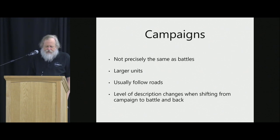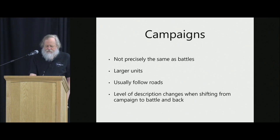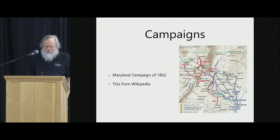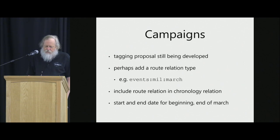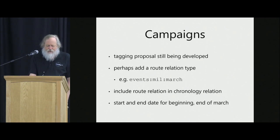Campaigns are a little different — not precisely the same. The units are larger and they're following roads, so we're looking at a change in level of description. This is a typical example of a campaign map — you see the red lines for the Confederates and the blue lines for the Union, and we'd be looking to replicate that road network. I'm still developing this proposal, but we're talking about something like event:military_march, including a route relation in the chronology relation to show the road march route between locations with start and end dates. And that's where I'll stop, because being on time is good.